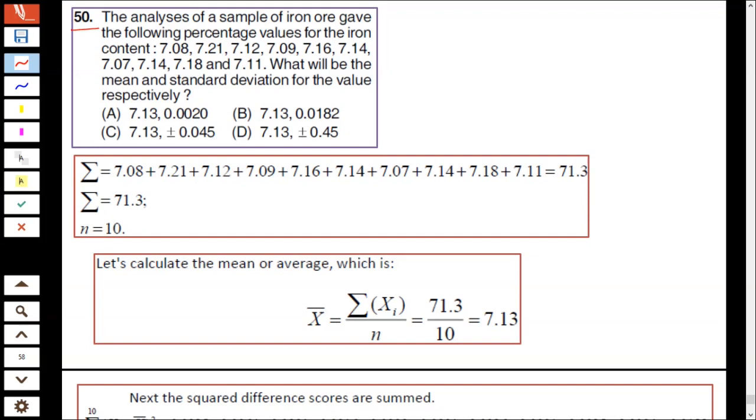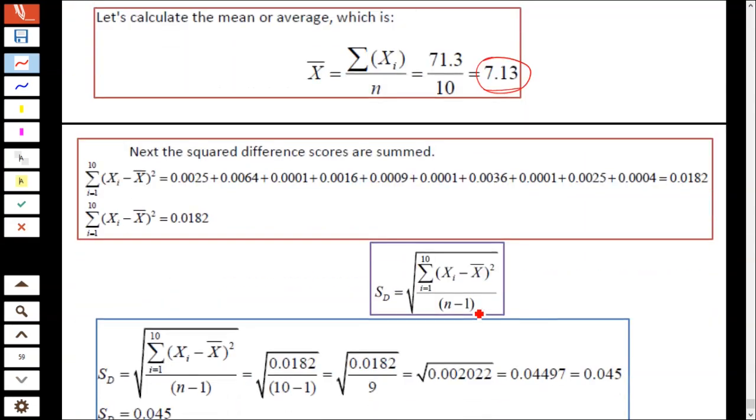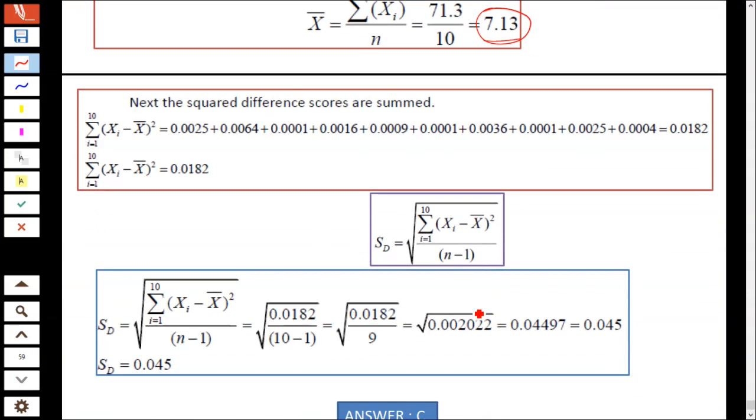Question number 50: The analysis of a sample of iron ore gives the following values. What will be the mean and standard deviation? First, mean is 7.13. The standard deviation formula is square root of sum of (x minus x-bar) squared divided by (n minus 1). The standard deviation value is 0.045.